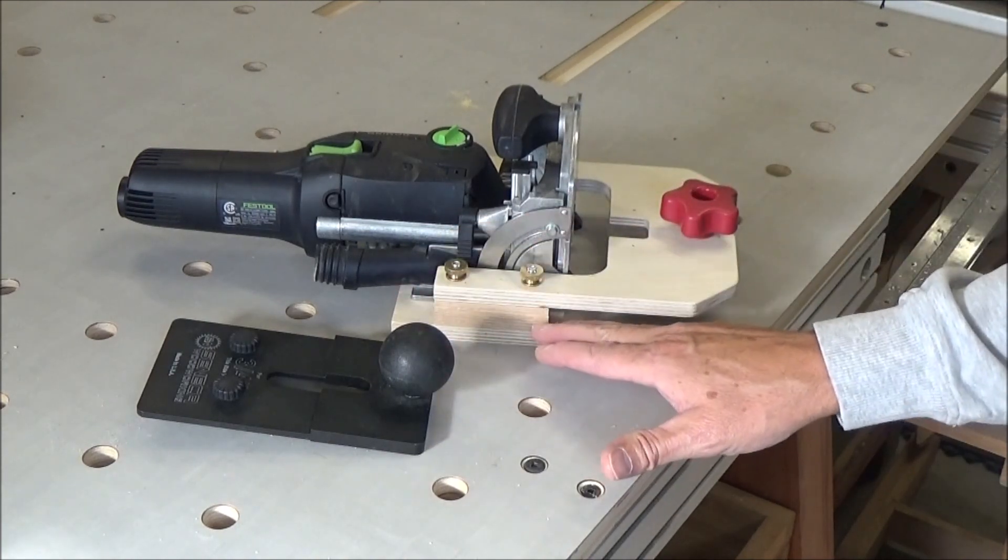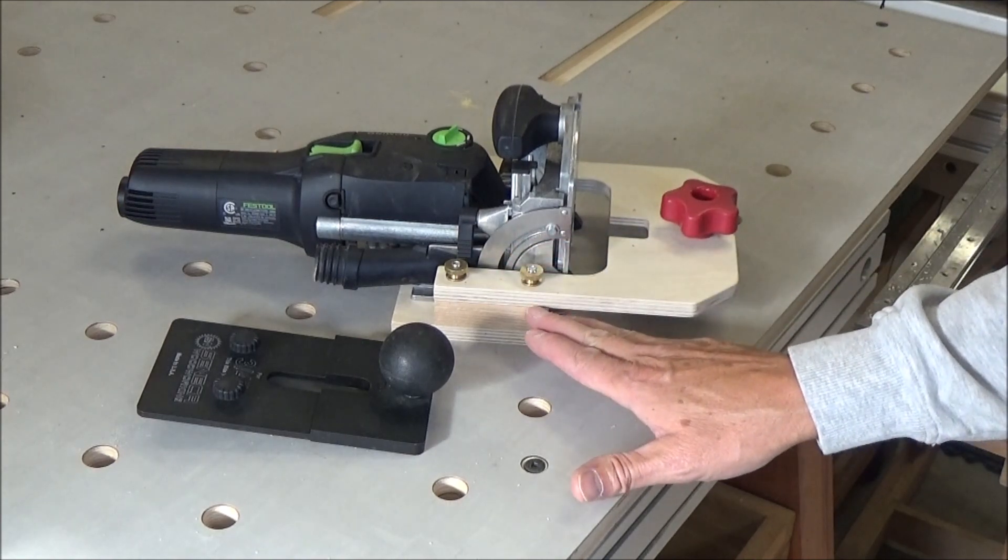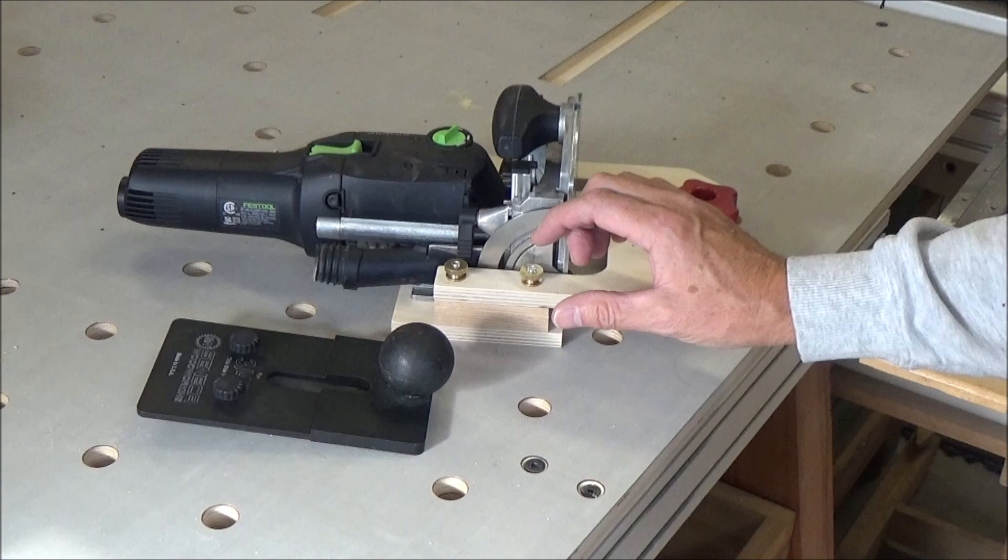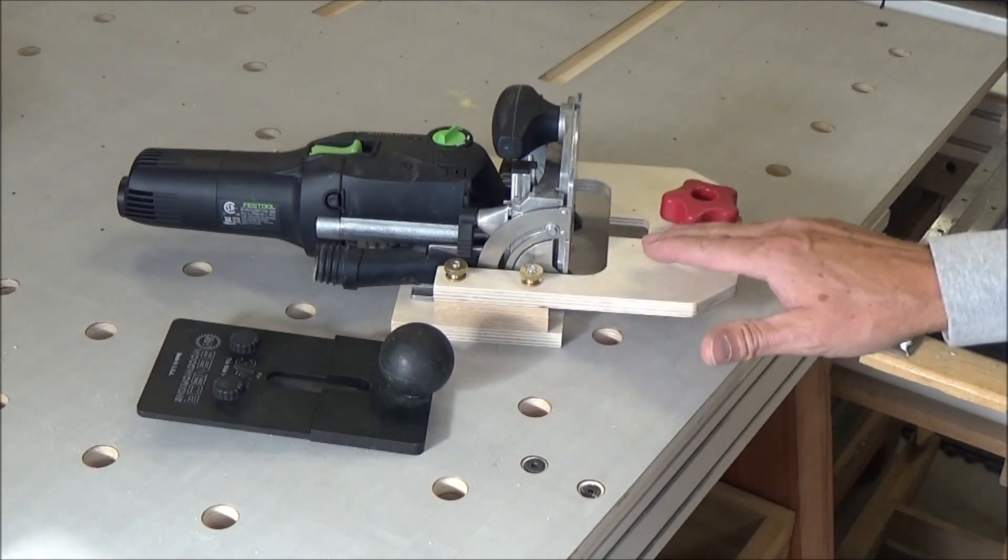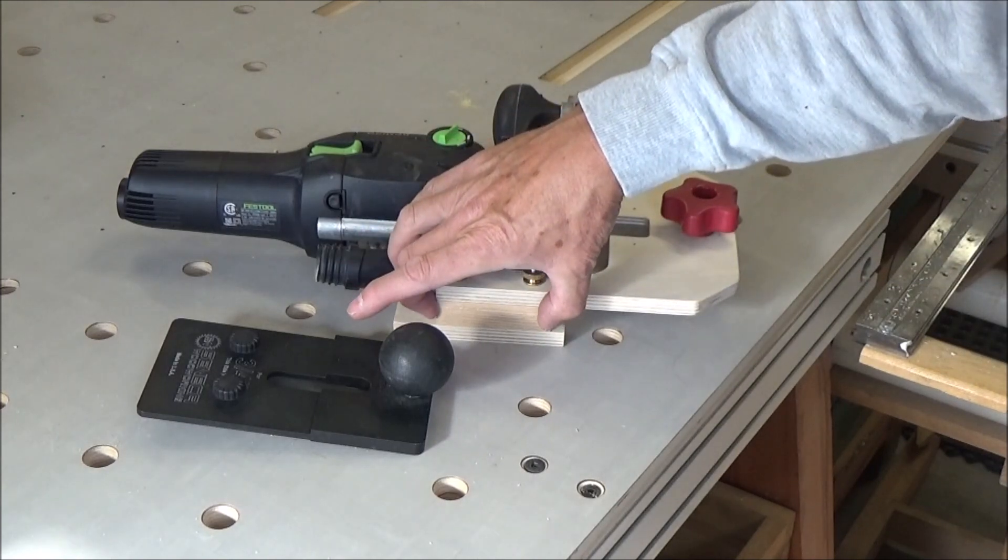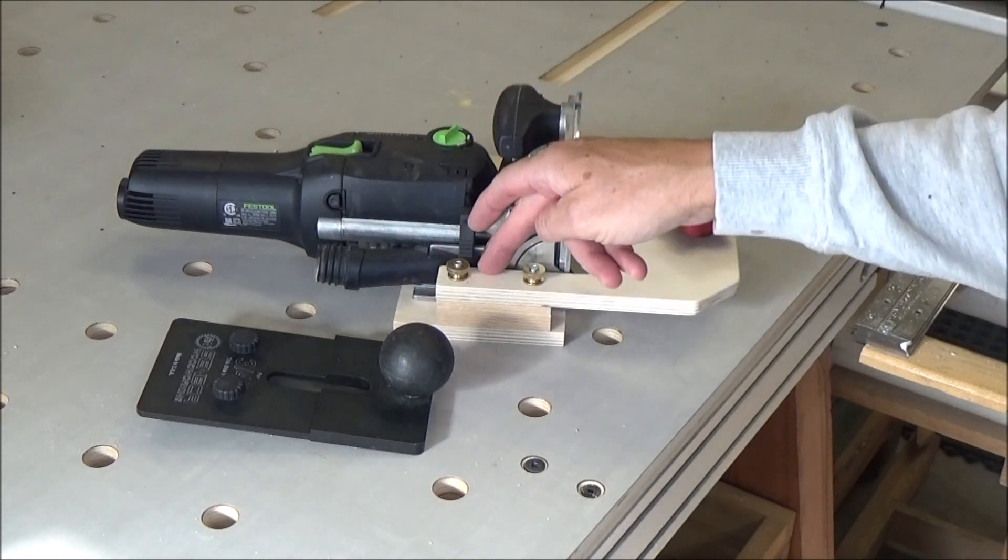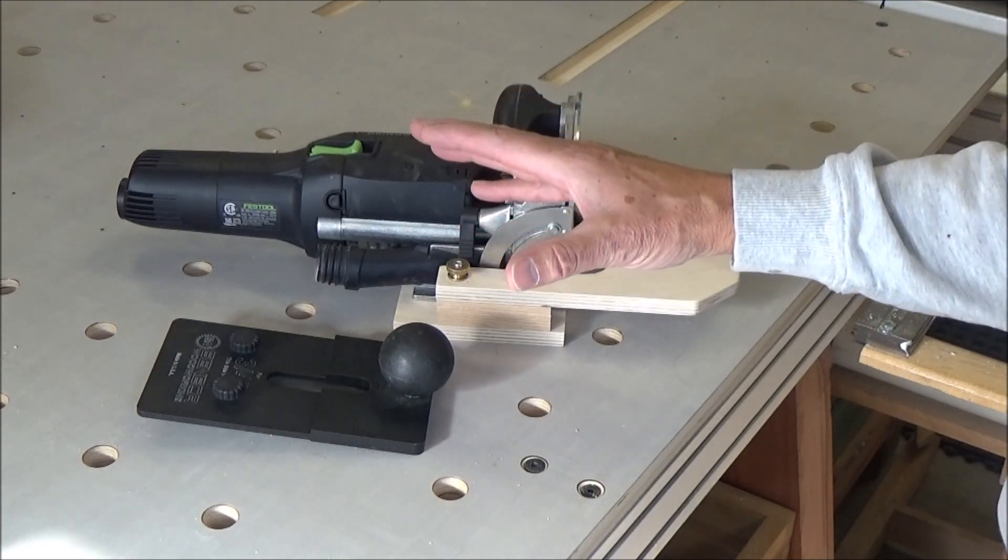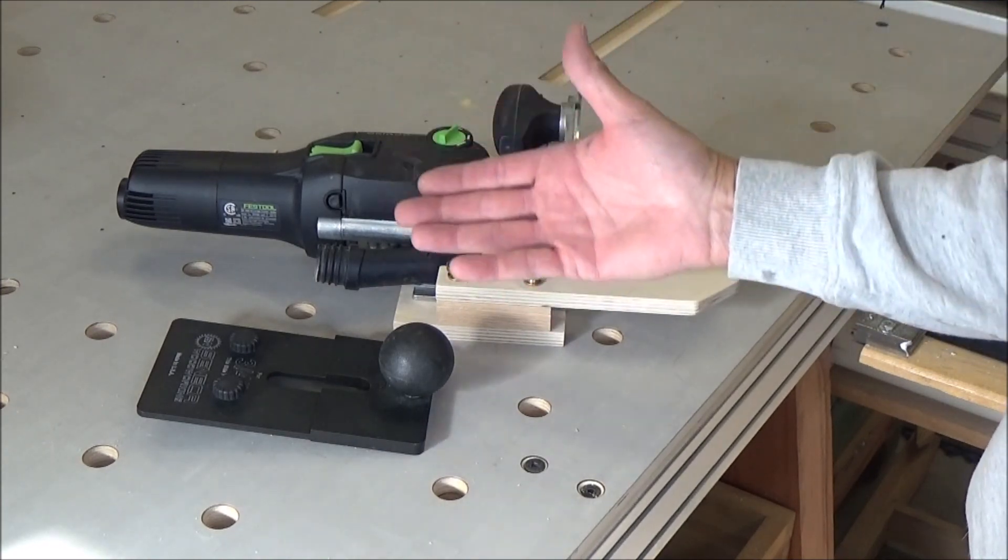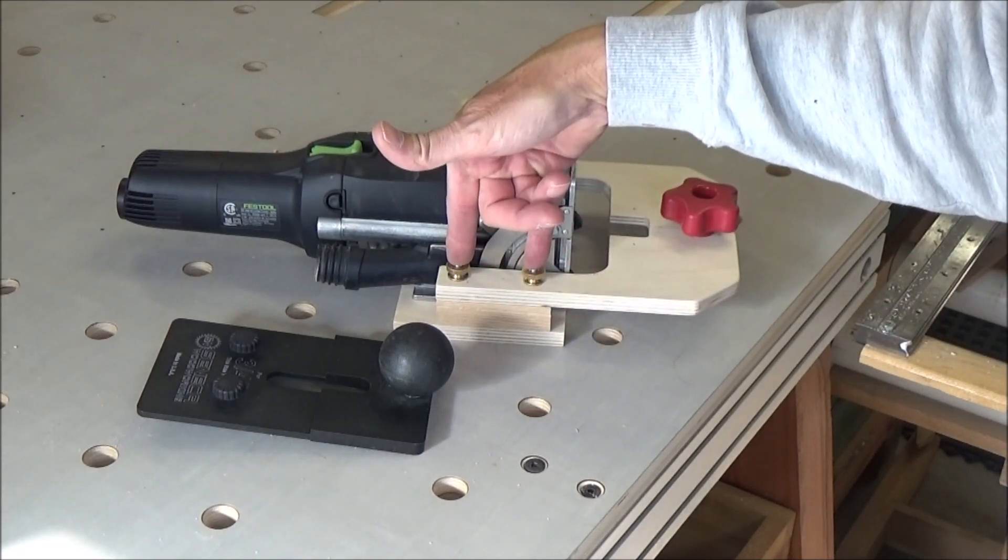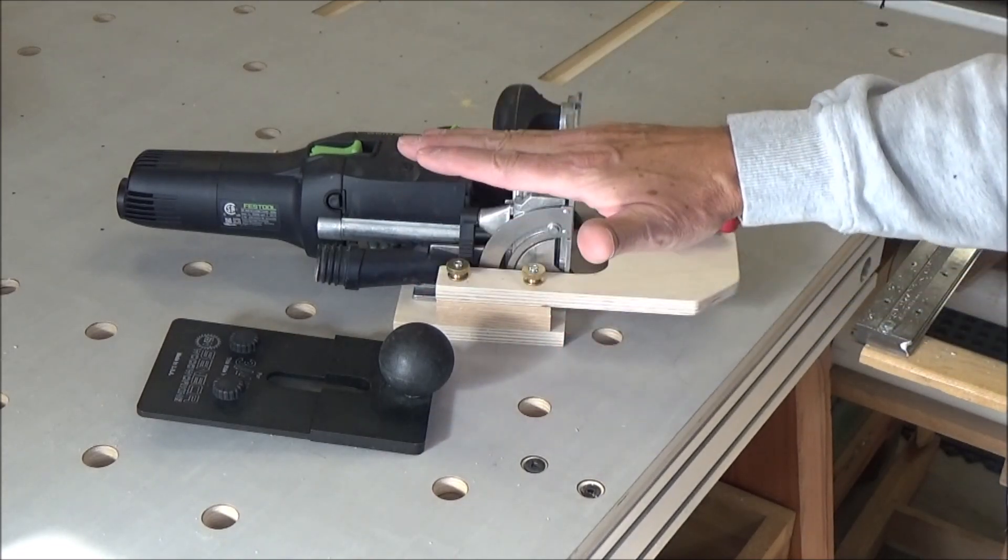It's set up for three-quarter inch material. If I want to change the center plunge point, all I need to do is change this spacer. It's about three and a half inches long. The holes are two inches on center, so whatever I make my new spacer out of, I know that all I have to do is drill two-inch on-center holes. I can bring the fence up or down.